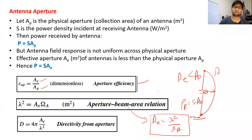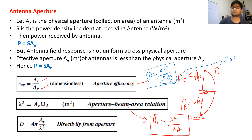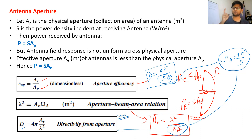From the previous lecture, directivity is defined as 4 pi divided by omega-A, which is the beam area or solid angle of any antenna. From this, we can substitute omega-A as 4 pi divided by D into the effective aperture formula. We then get directivity as D = 4 pi times effective area divided by lambda squared. This gives us another formula for directivity.